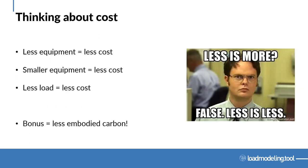A quick takeaway: less equipment equals less cost. Smaller equipment equals less cost. Less load equals less cost. And as a bonus when we think about the building industry, it will also mean less embodied carbon — smaller ductwork, smaller pipework, smaller systems all mean less. So always think: less is less, less is not more in this case. We should always be trying to reduce loads as we go through design.